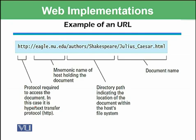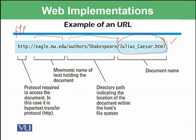Other protocols can also be used here, like FTP or variations of HTTP such as HTTPS. The next part is the mnemonic name of the host holding the document. Then, from 'authors' through 'Shakespeare' is the directory path indicating the location of the document within the host file system. Finally, the last part is the actual document we want to retrieve.